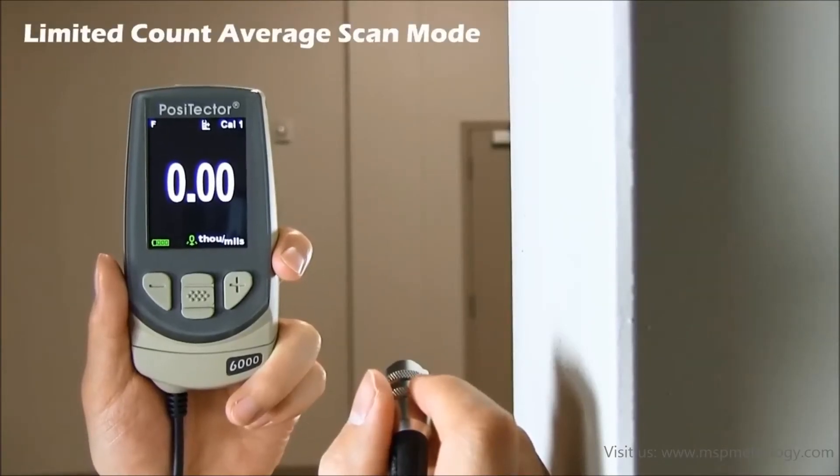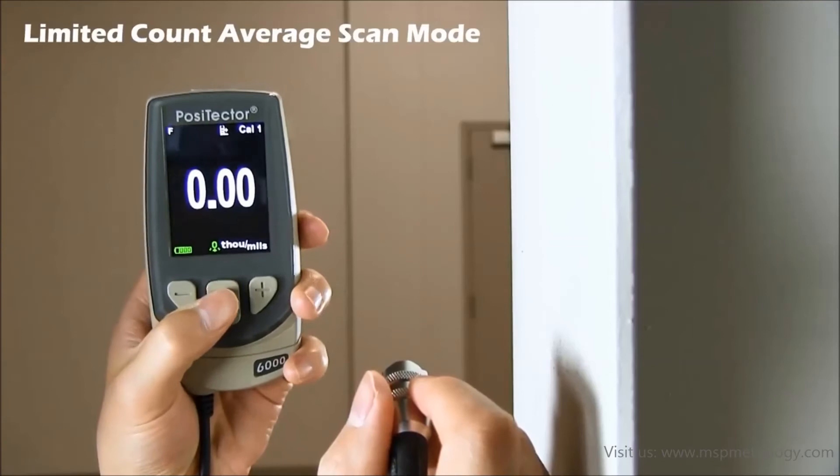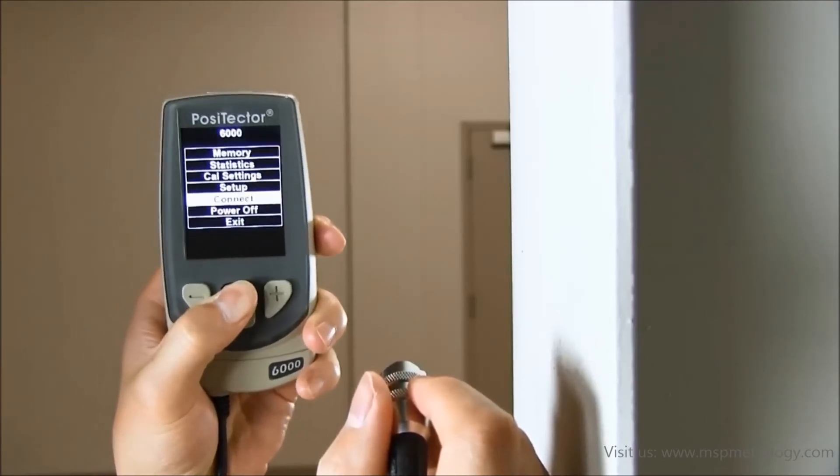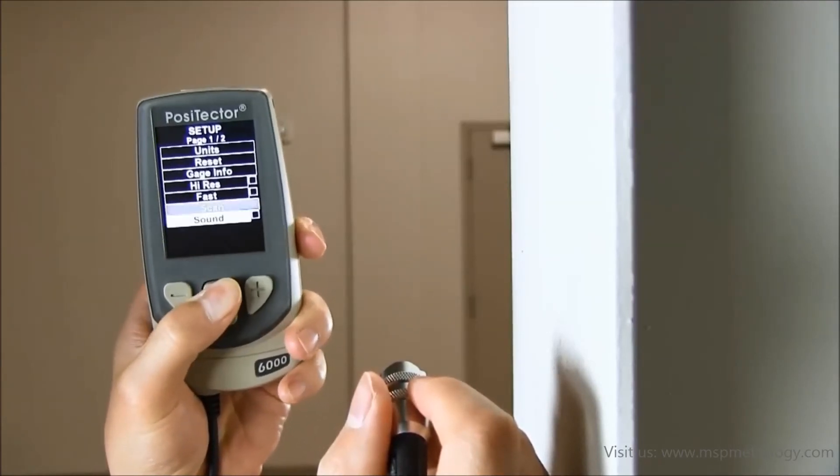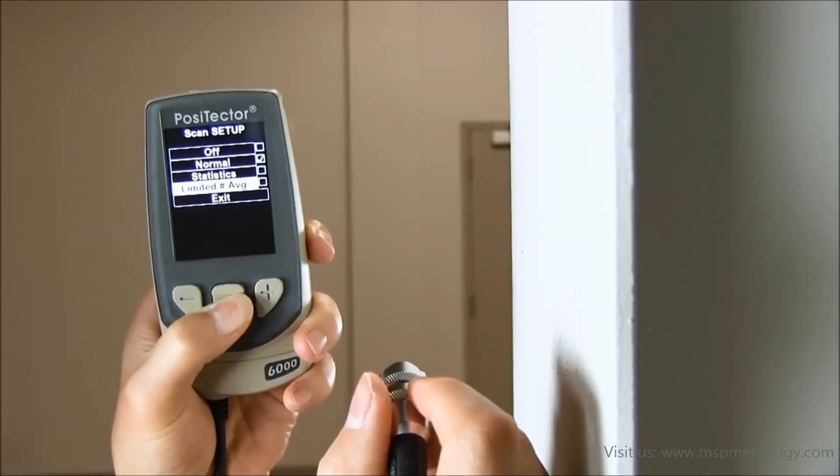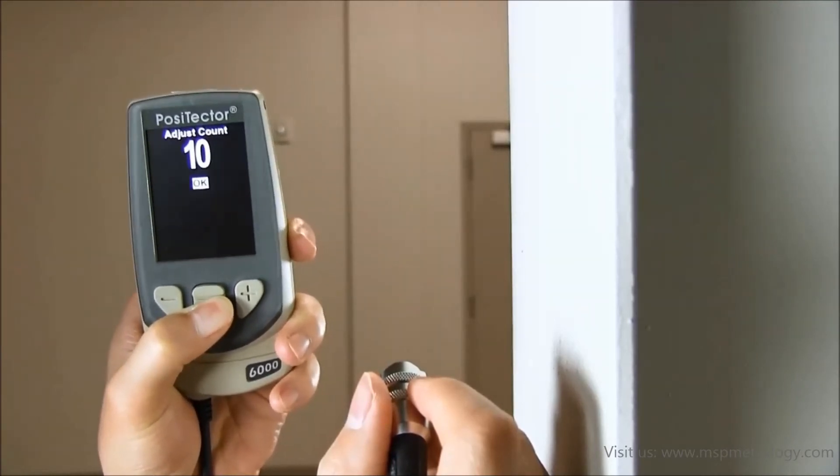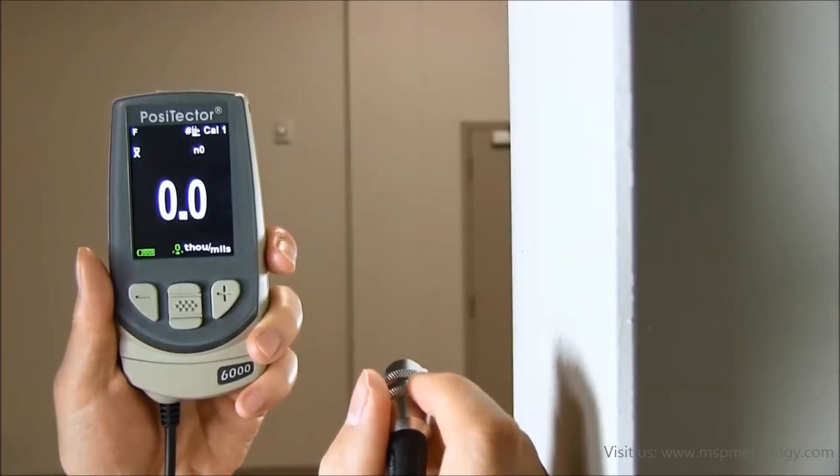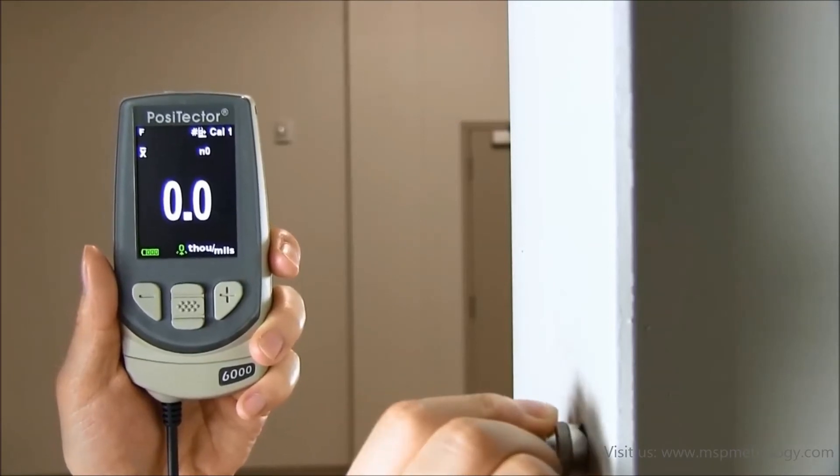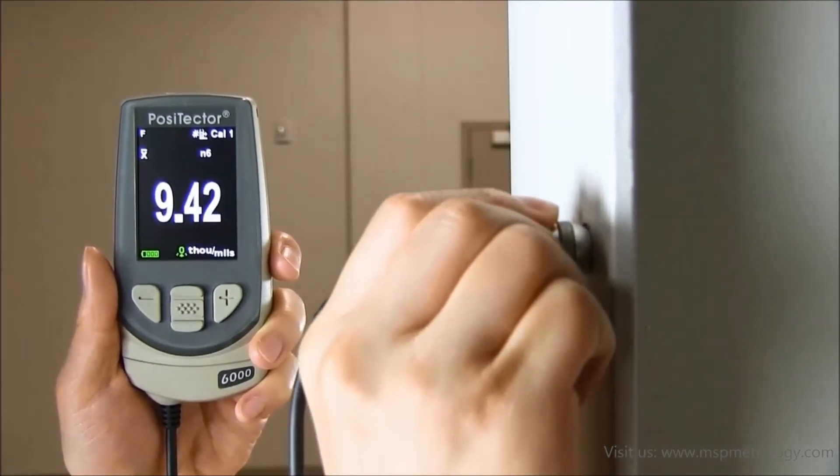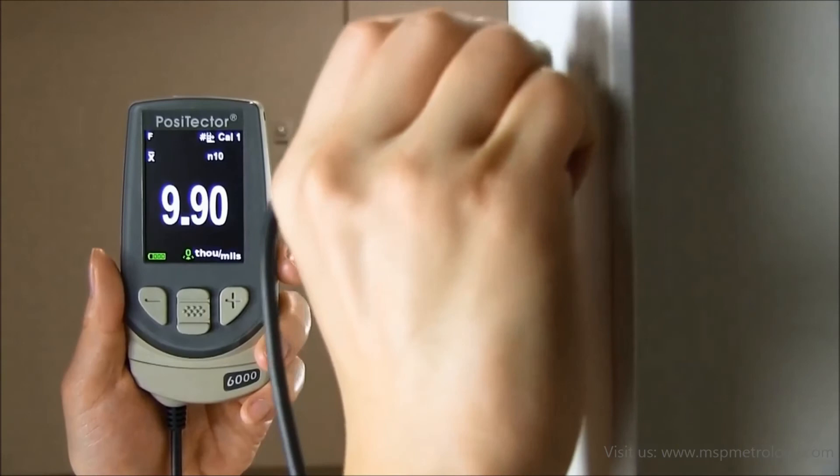In limited count average scan mode, the user is prompted to select a number of readings per scan. Each time the probe is placed on the surface, the selected number of readings is taken. The average is displayed on the screen and saved into memory if enabled. Like statistics scan mode, the individual readings aren't displayed or saved into memory.